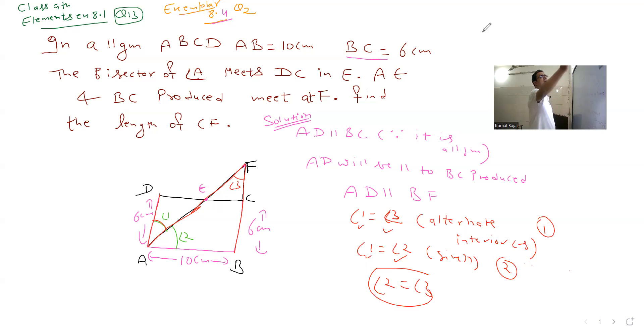If angle 2 and angle 3 are equal, now look at triangle BAF. In triangle BAF, if angle 3 is equal to angle 2, then the opposite sides are equal. So the side opposite to angle 3 is AB, and the side opposite to angle 2 is BF. Therefore, AB equals BF.